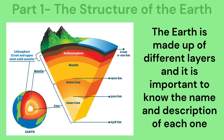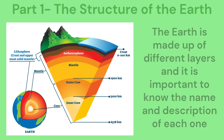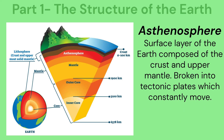The earth is made up of different layers and it is important to know the name and description of each one. The lithosphere is the surface layer of the earth composed of the crust and upper mantle. It is broken into tectonic plates which constantly move.